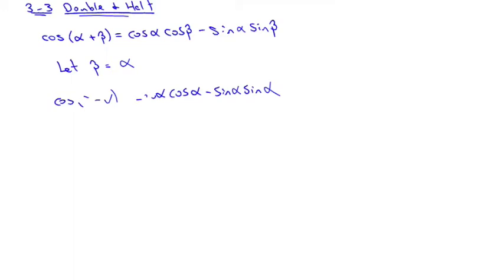So what's alpha plus alpha? 2 alpha. So this is cosine of a double angle — 2 times an angle — is equal to... cosine alpha times cosine alpha is cosine squared alpha. And sine alpha times sine alpha is sine squared alpha. We get this nice little identity: cosine of 2α equals cosine²α minus sine²α.